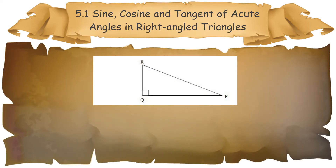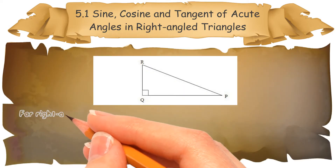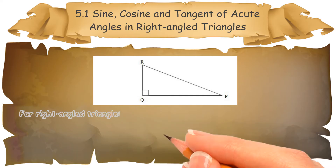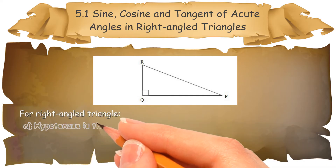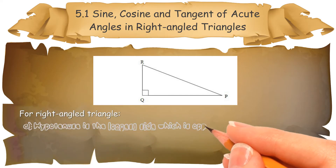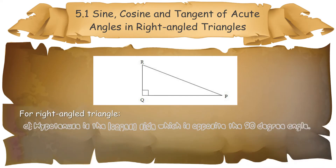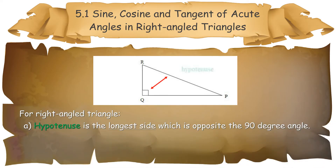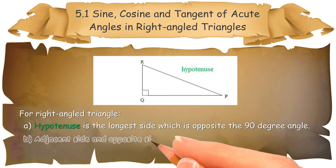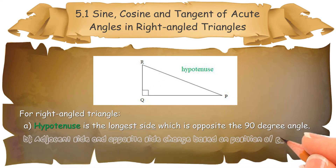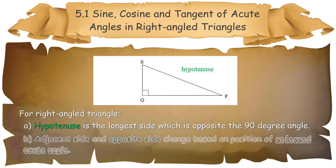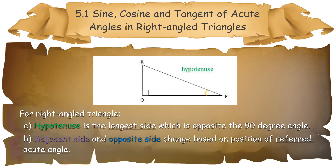For a right-angled triangle: (a) the hypotenuse is the longest side, which is opposite the 90-degree angle. (b) The adjacent side and opposite side change based on the position of the referred acute angle.